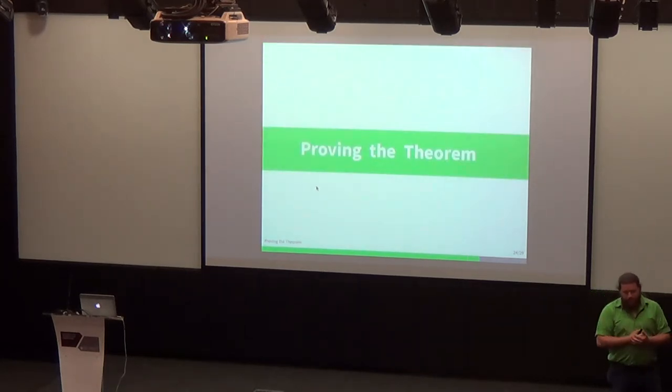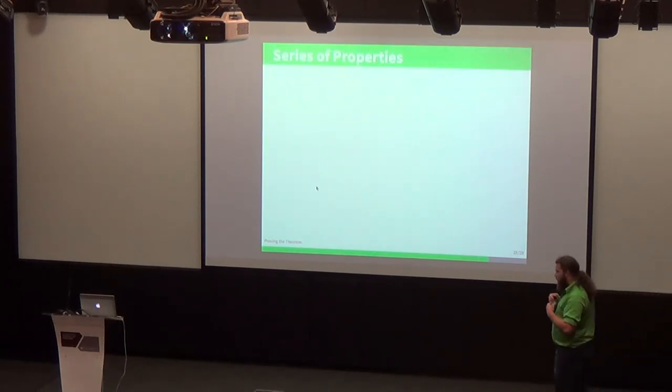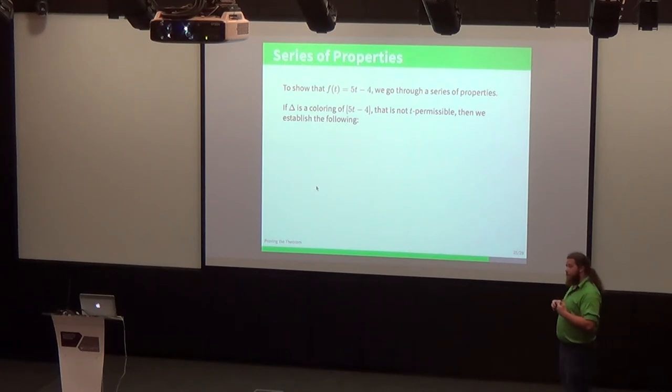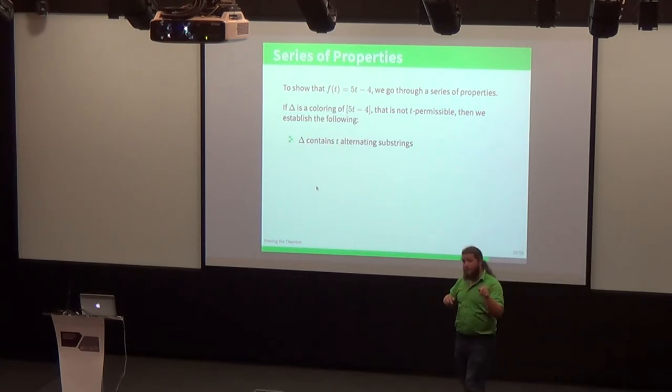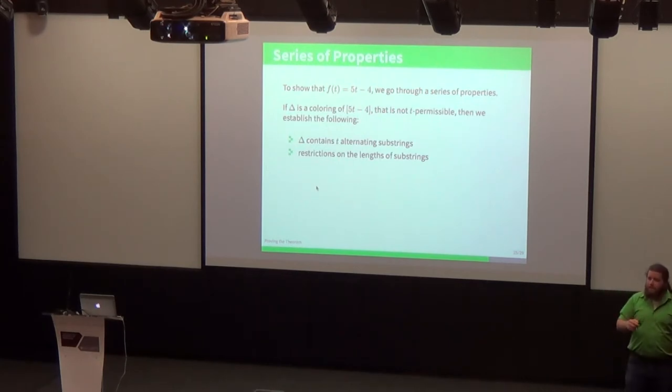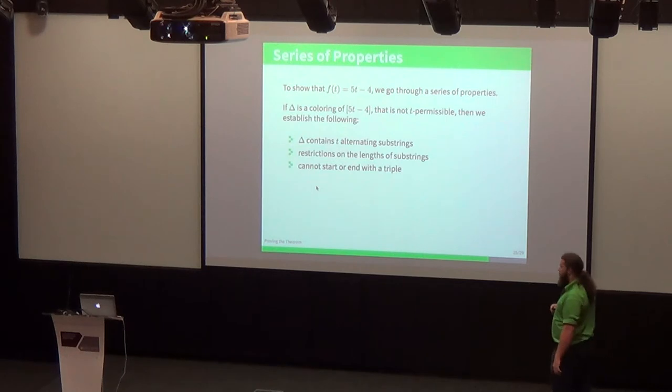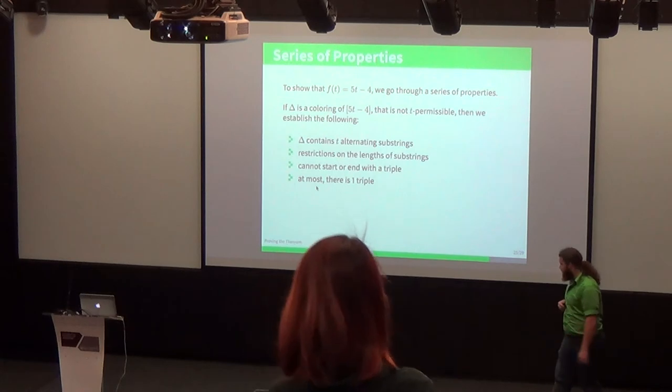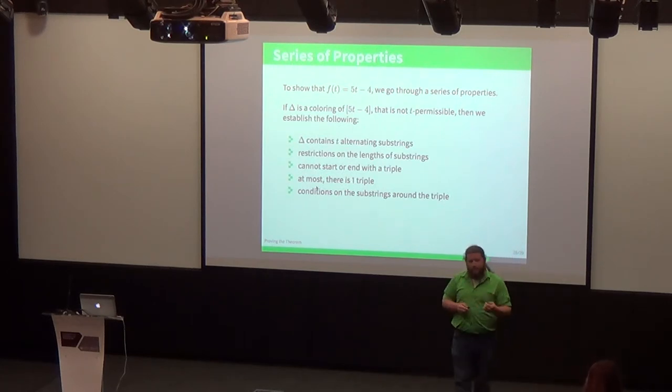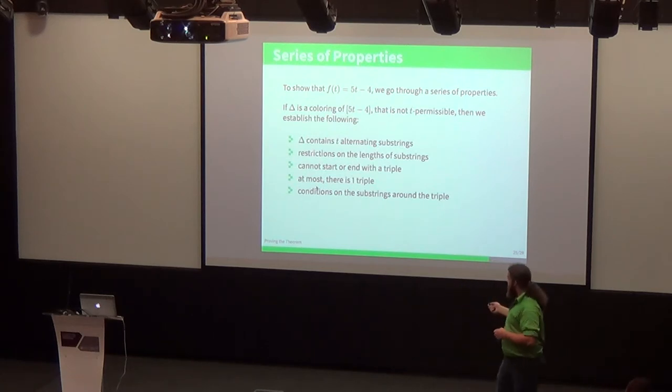How do we actually get to proving this theorem? We have this lemma that says we're somewhere between 5t minus 4 and 5t minus 2. We were able to work through a series of properties that a string would have to have if it wasn't t permissible. What we're able to show is that delta, our string, has to contain at least t alternating substrings. There's restrictions on the length of each of these substrings: they all have to be of length equivalent to 2 mod 3, except for 1, which is 1 mod 3. You can't start or end with a triple, and in fact there's only one triple if you're not t permissible. There's also some conditions on what you can have around your triple. That is, it has to be bounded by that string of 1 mod 3 that we mentioned in the second property.